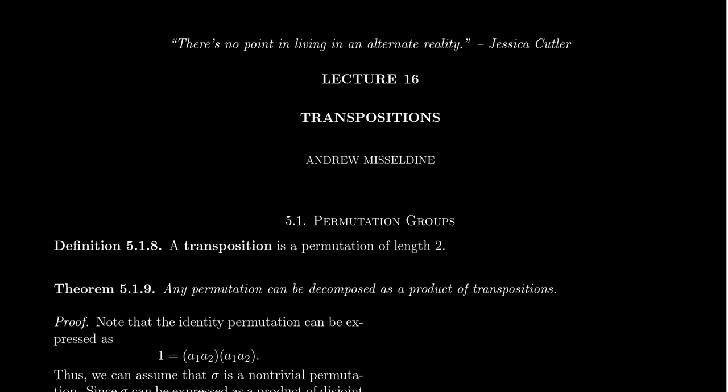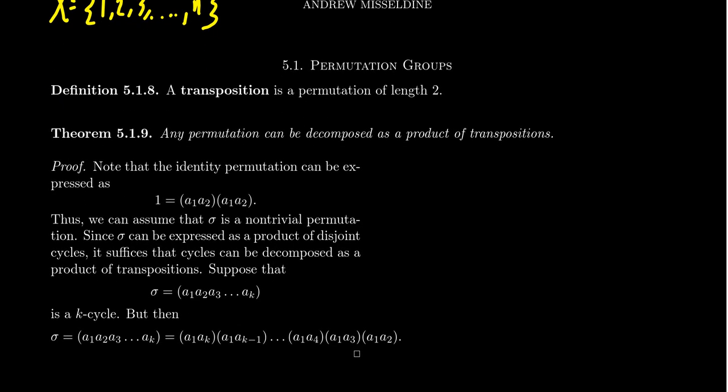Previously, we've been talking about the permutation group S sub X, where X is some arbitrary set. Now we're just going to simplify and focus on the set S sub N, where X is the set 1, 2, 3, all the way up to N. There's really not a lot of benefit thinking about these things for some general set. It's really just the cardinality of the set that matters. So we're going to talk about the symmetric group S_N, but be aware that the stuff we're talking about here really generalizes to any permutation group.